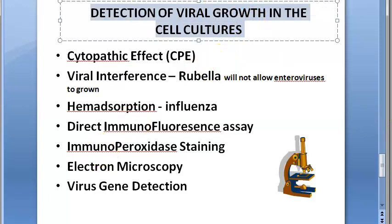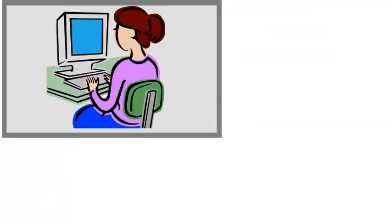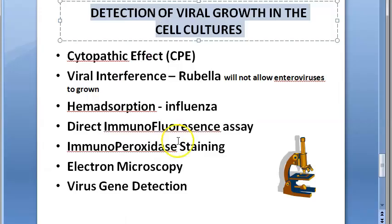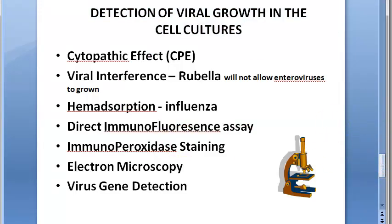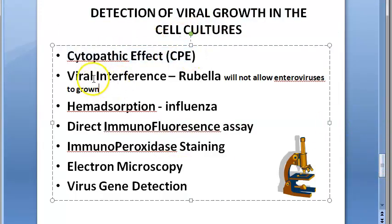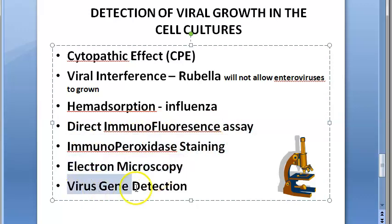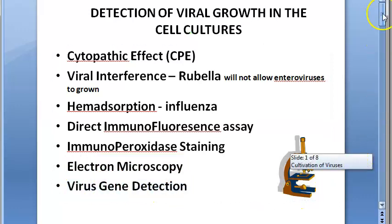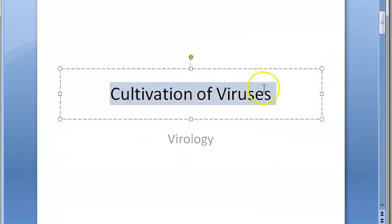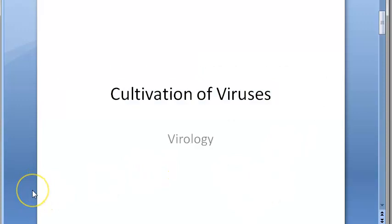That covers detection of viral growth in cell cultures. You should be able to explain cytopathic effects, viral interference, heme adsorption, direct immunofluorescence assay, immunoperoxidase staining, electron microscopy, and virus gene detection in the exam. This completes the cultivation and isolation of viruses part of the series.